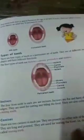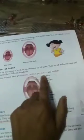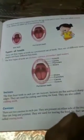Question 2: Name the different types of teeth and write their functions. The different types of teeth are incisors, canines, premolars, and molars. Write the functions given for each — incisors, canines, premolars, and molars.